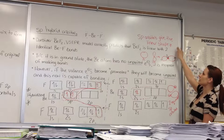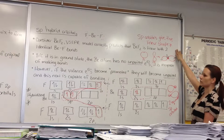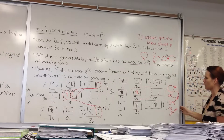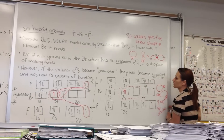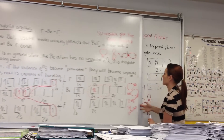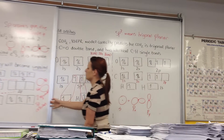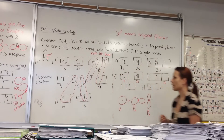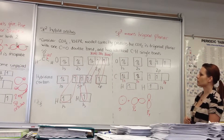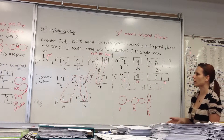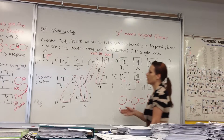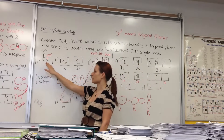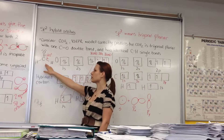An important thing to note is that SP orbitals give the linear shape. Moving on to SP² hybrid orbitals — we're going to talk about formaldehyde, and the VSEPR structure for formaldehyde tells us that it is trigonal planar.